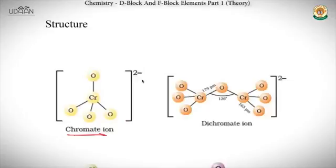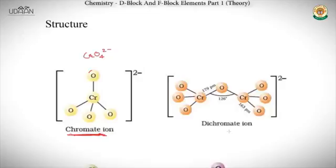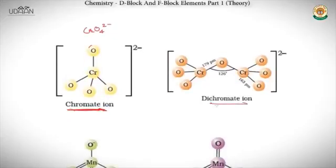Now let's discuss the structure of some important compounds found in D and F block elements. First, the chromate ion CrO₄²⁻ is yellow in color. The next is the dichromate ion Cr₂O₇²⁻, which is orange in color, with a Cr–O–Cr bond angle of 126°. These colors are very important to remember.